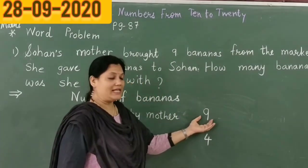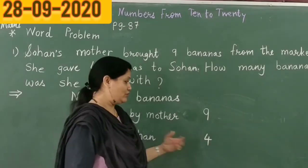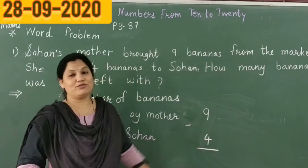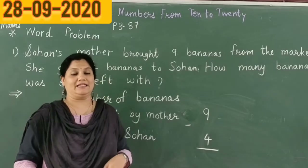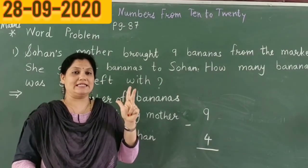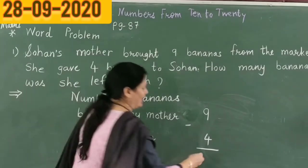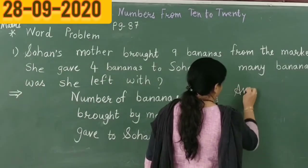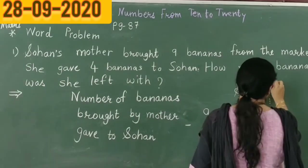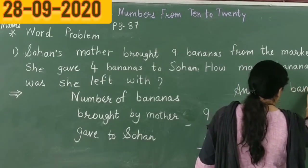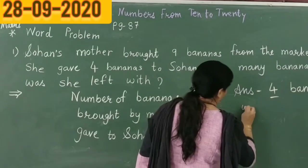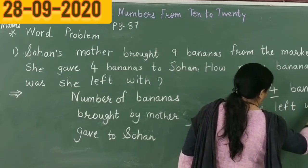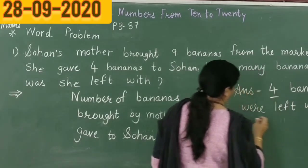She has 9 bananas and she gave 4 to Soha. So what will she do? We will have to subtract. 9 minus 4. We have to count forward after 4 till 9: after 4 — 5, 6, 7, 8 and 9. So 5 bananas will be left with mother.